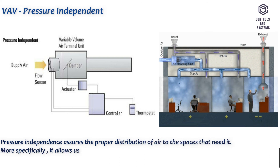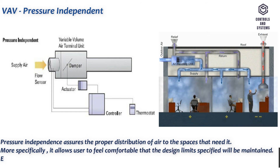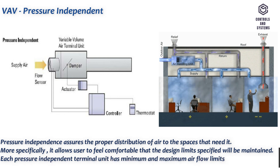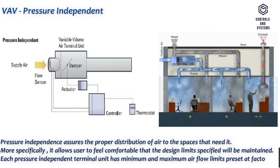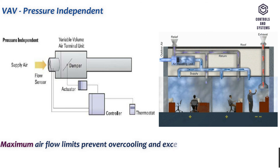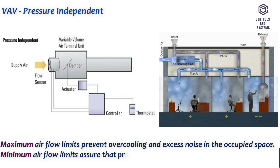Pressure independence assures the proper distribution of air to the spaces that need it. More specifically, it allows users to feel comfortable that the design limits specified will be maintained. Each pressure independent terminal unit has minimum and maximum airflow limits preset at the factory. Maximum airflow limits prevent overcooling and excess noise in the occupied space. Minimum airflow limits assure that proper ventilation is maintained.